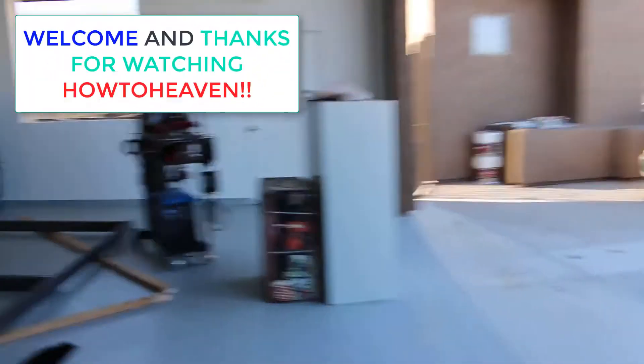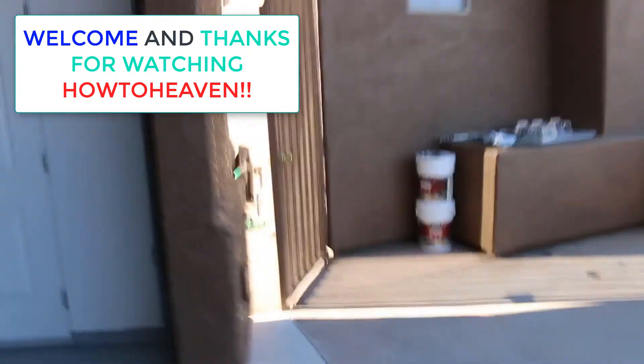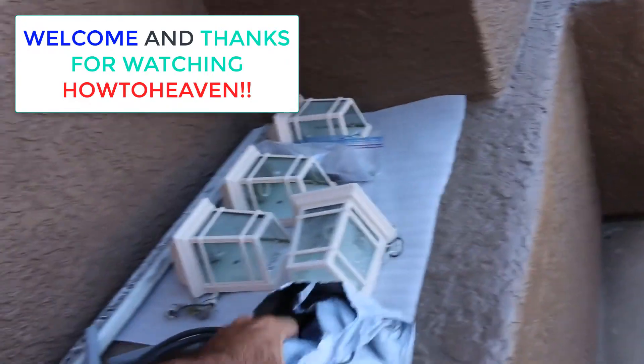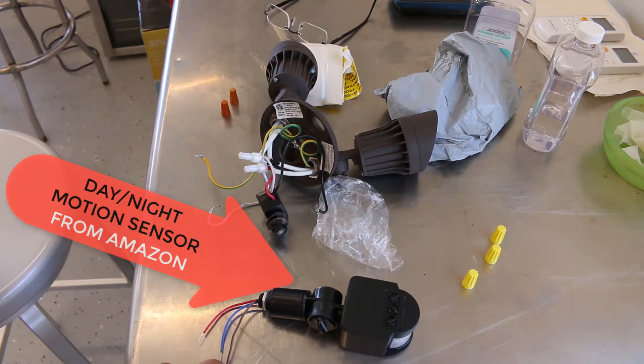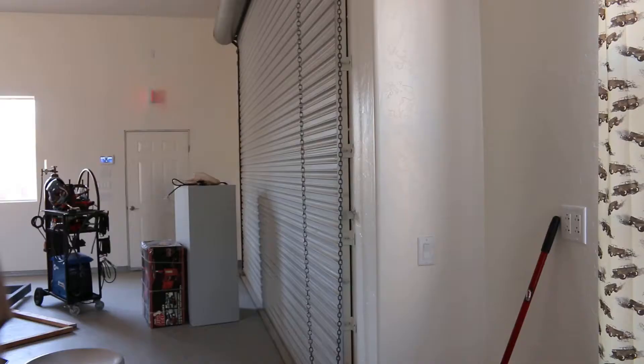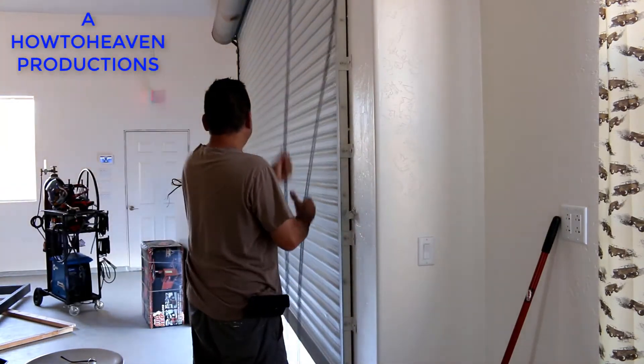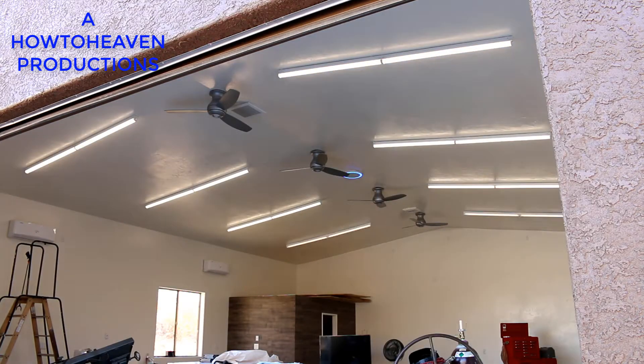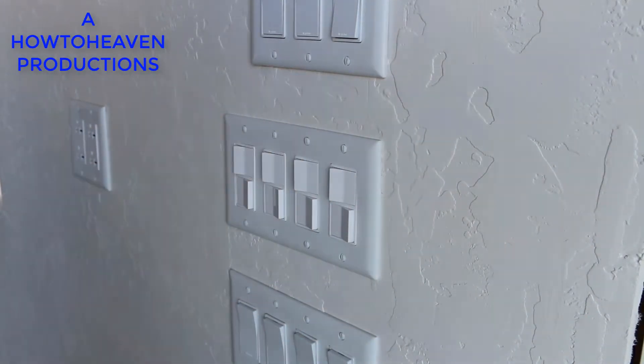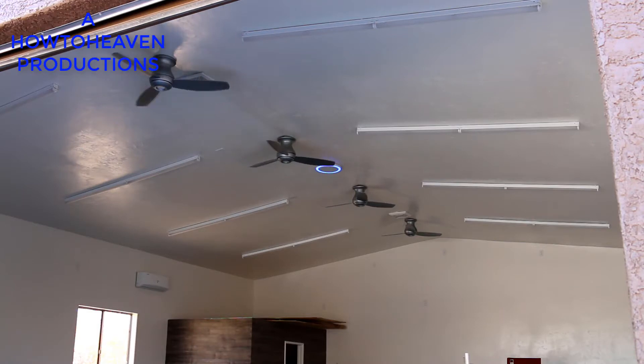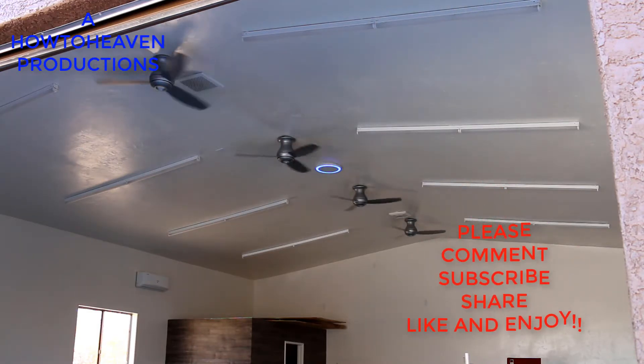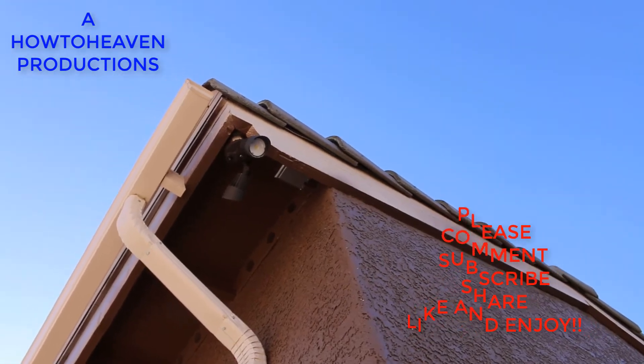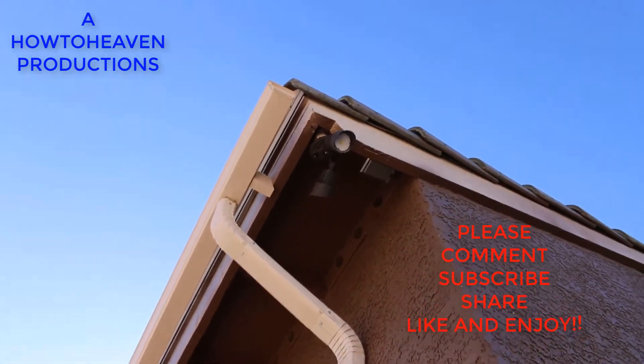So today we're going to do something a little different. We are going to be installing one of these babies, an Amazon day-night motion sensor. That light right there is a floodlight that came with a day-night sensor. I want to change it to a motion and day-night sensor and that's what we're doing today.